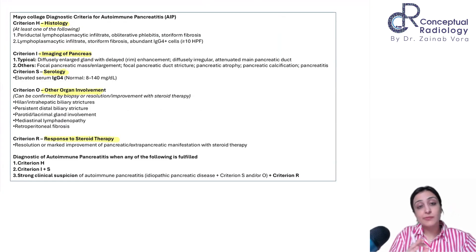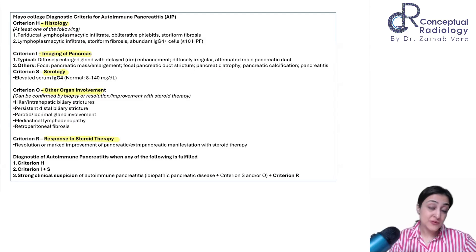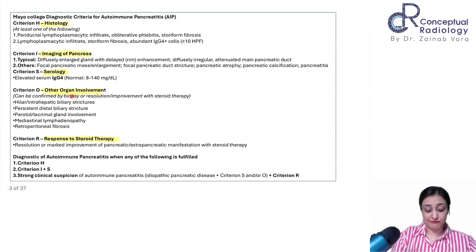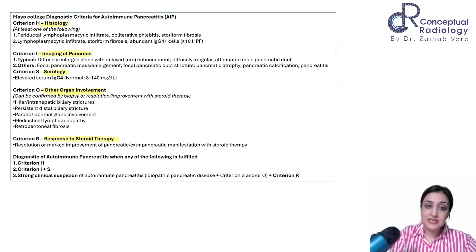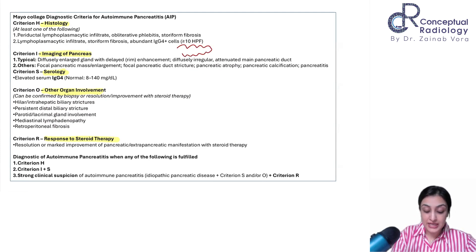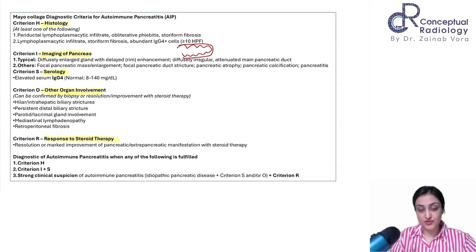For imaging, the pancreas is the most common organ involved. On pancreatic imaging, remember there is loss of lobulation, sausage-shaped pancreas, a fibrotic rim showing delayed enhancement, and pancreatic duct strictures. This is usually diffuse but can be focal as well.